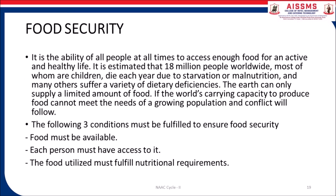Let's understand what is food security. It is the ability of all people at all times to access enough food for an active and healthy life. It is estimated that 18 million people worldwide, most of whom are children, die each year due to starvation or malnutrition. The earth can only supply a limited amount of food. If the world's carrying capacity to produce food cannot meet the needs of a growing population, conflict will follow. Three conditions must be fulfilled to ensure food security: food must be available, each person must have access to it, and the food utilized must fulfill nutritional requirements.